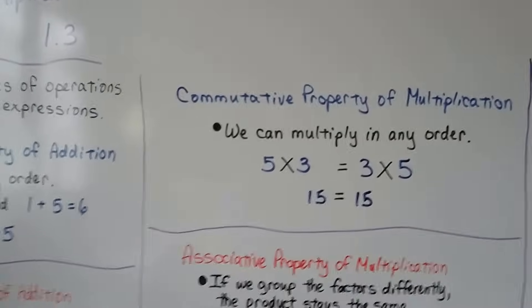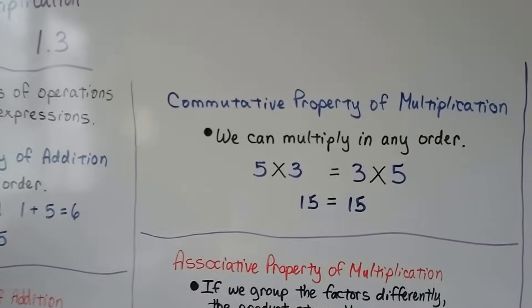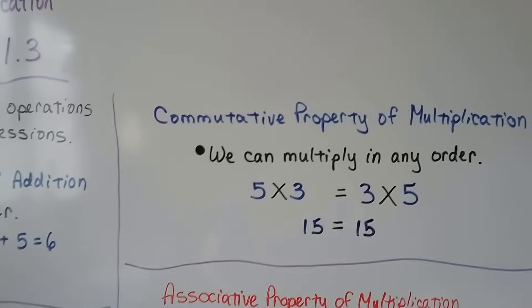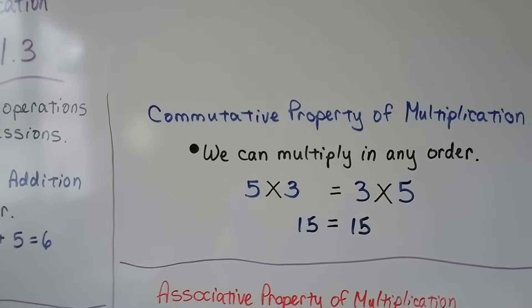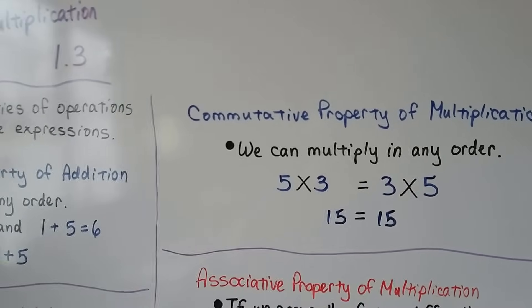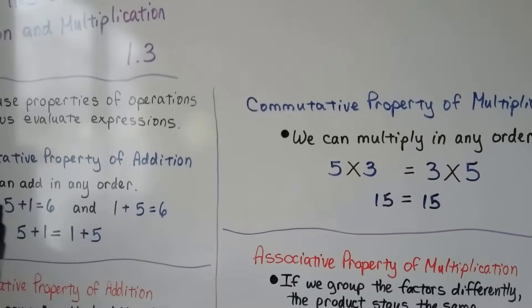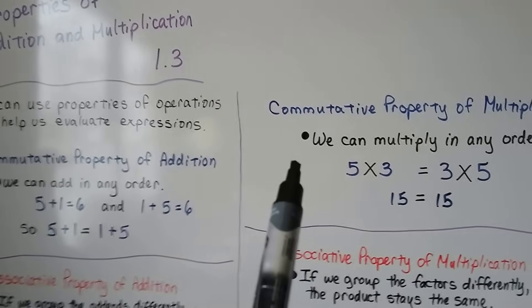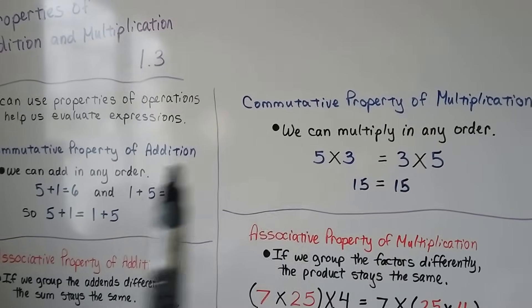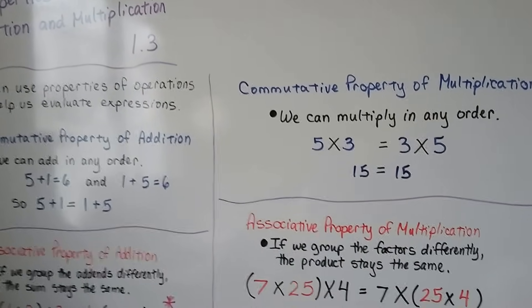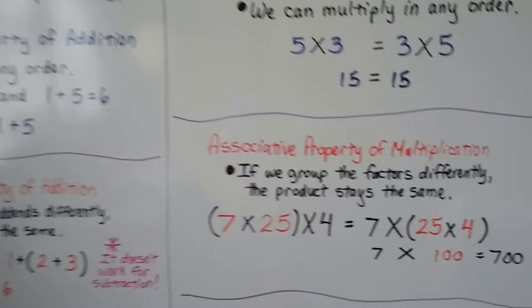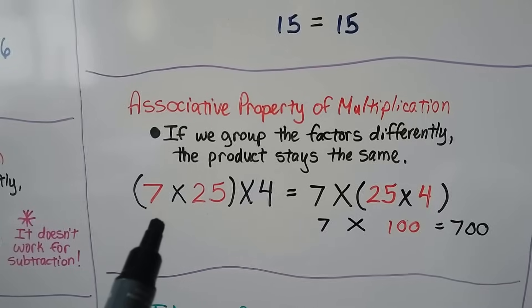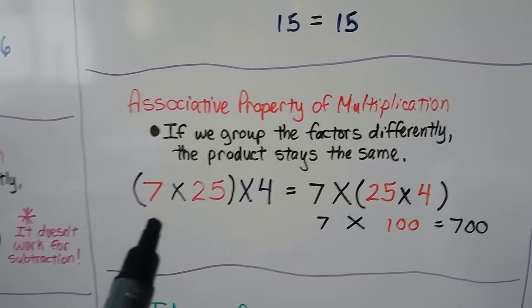For the commutative property of multiplication, we can multiply in any order. 5 times 3 is going to be equal to 3 times 5 — they both equal 15. Just as the commutative property of addition lets us add in any order, the commutative property of multiplication tells us we can multiply in any order. The associative property of multiplication tells us if we group the factors differently, the product stays the same.